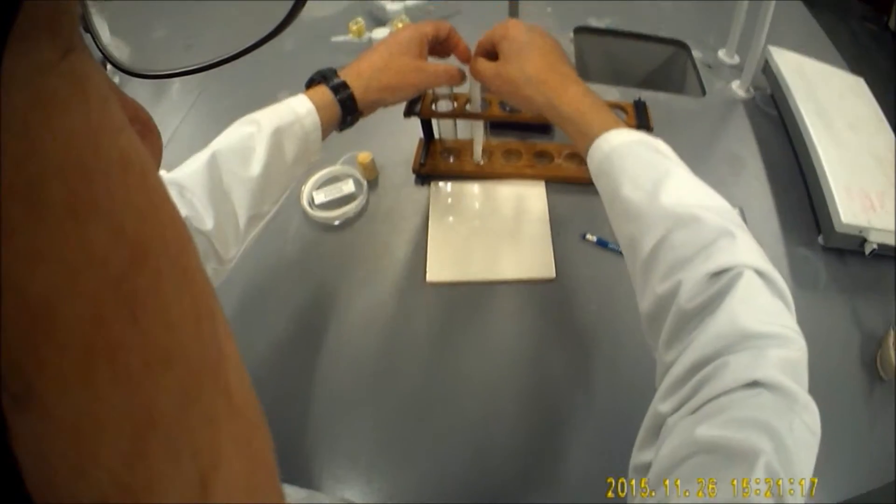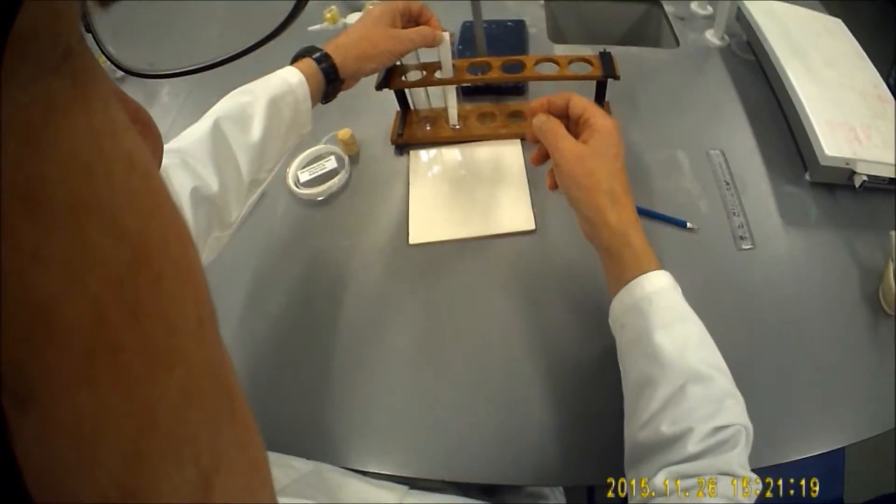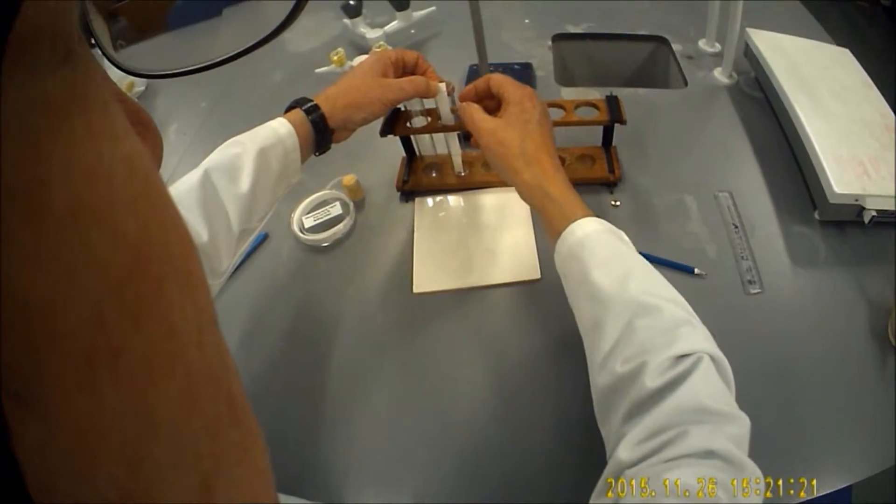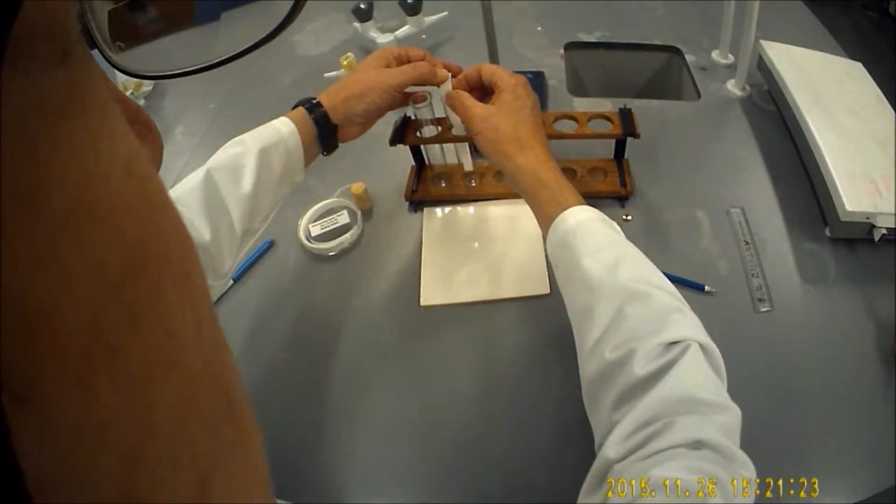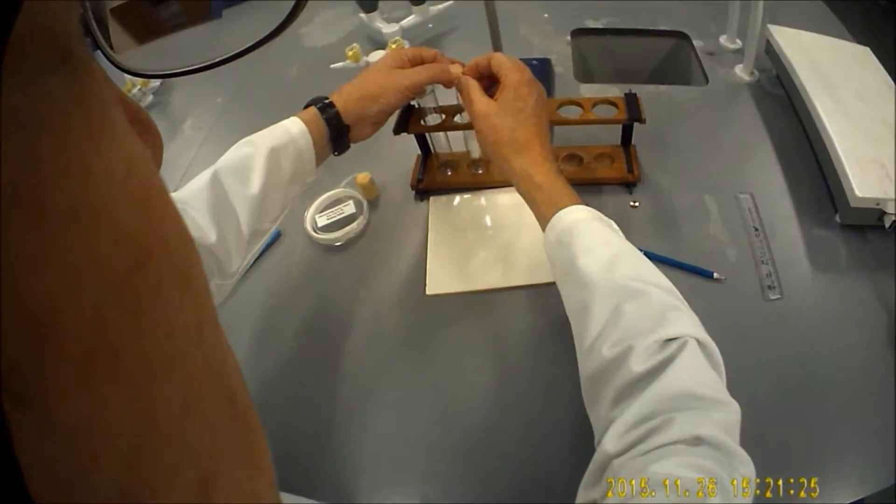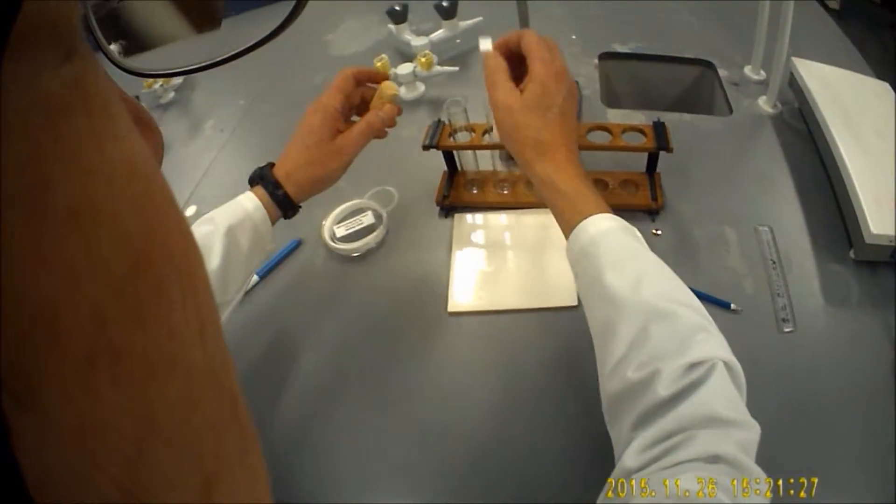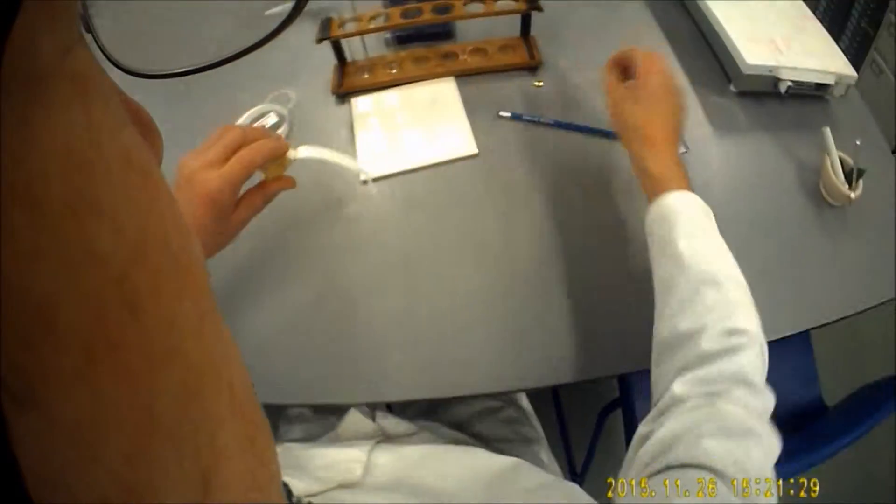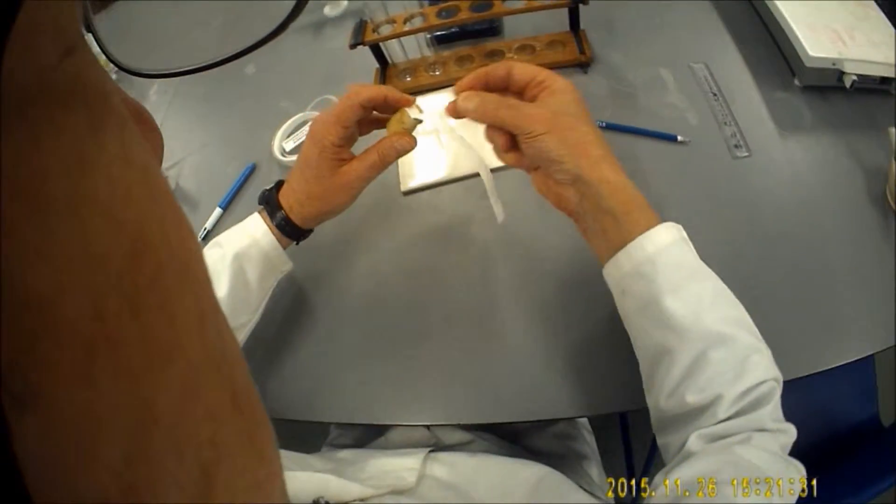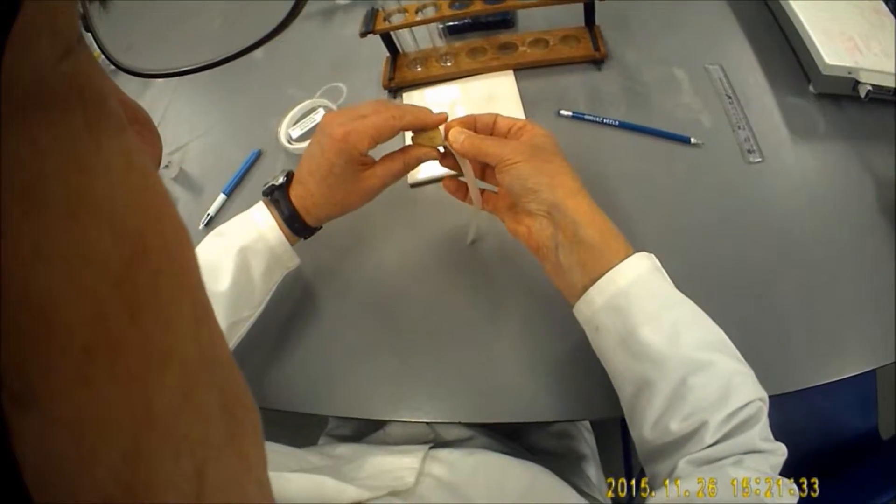I now need to just make sure that's going to clear the base of the boiling tube. Then I'm going to fold the top and fix it with a drawing pin to the underside of the cork.